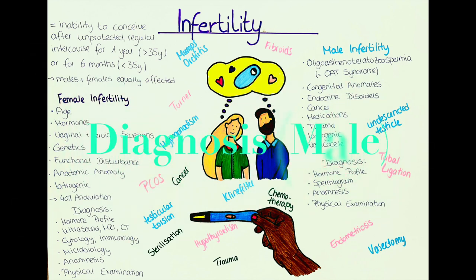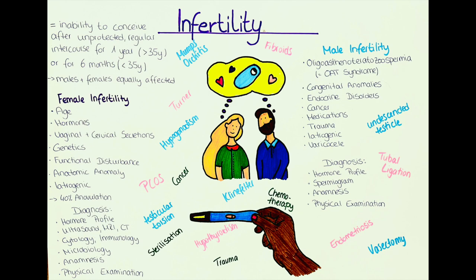How is male infertility diagnosed? To diagnose male infertility, we also start with a thorough anamnesis and a physical examination. We can check hormone levels to detect hypogonadism, or perform immunologic tests to detect spermatozoa antibodies. Genetic testing is also possible to detect abnormalities in the chromosomes. The most common test for infertility in men is the spermiogram.